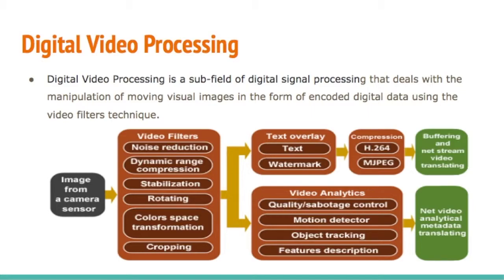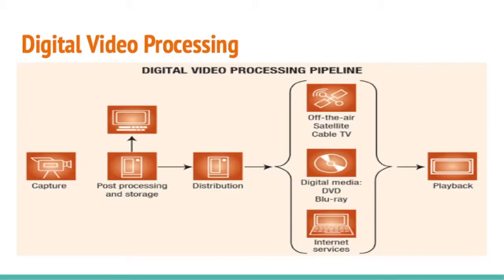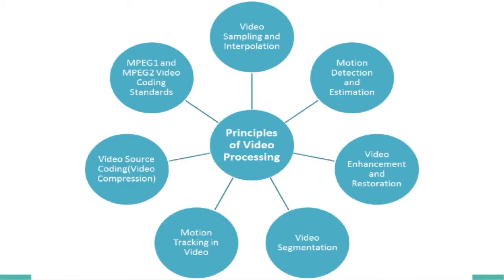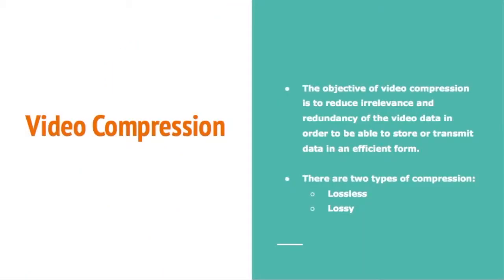Digital video processing is a subfield of digital signal processing that deals with the manipulation of moving visual images in the form of encoded digital data using video filters. The digital video processing pipeline starts with capture, then post-processing and storage, followed by distribution via air, satellite, cable, digital media such as DVD and Blu-ray, and internet services, and finally playback. There are seven principles of video processing. The objective of video compression is to reduce irrelevant and redundancy in video data in order to store or transmit it efficiently.